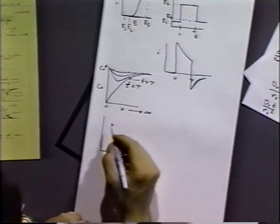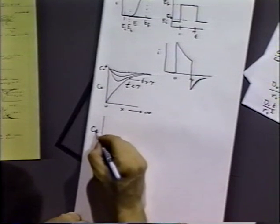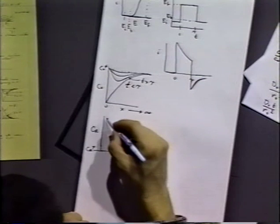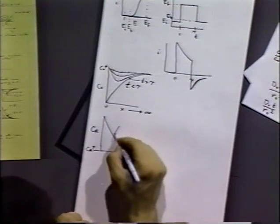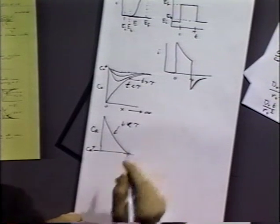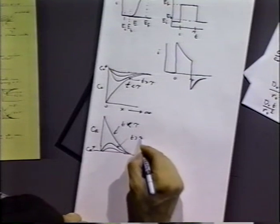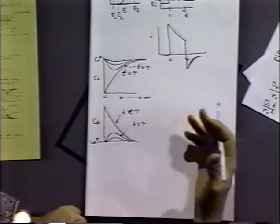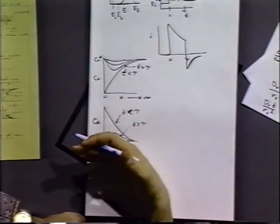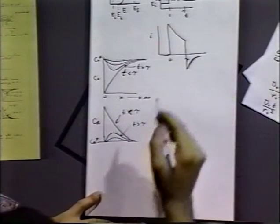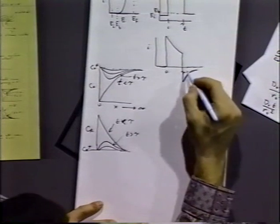C sub R under the same conditions would look something like this. Initially the bulk concentration of C sub R is zero. For times less than tau we get a curve like that, and then for time greater than tau we get these sorts of plots. We've made some C sub R, it starts to diffuse out into solution. Now we're oxidizing that R back to O, and at the electrode surface that concentration drops, maybe to zero, giving these hump-like shapes of concentration profiles out in solution. We see some current flow for that reoxidation process.